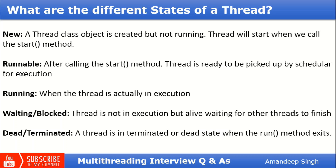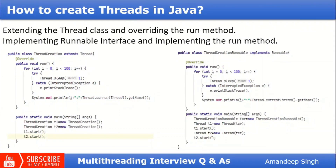The next is Running state — when the scheduler actually picks up the thread and starts its execution, that thread is in the Running state. After that is Waiting or Blocked — the thread is not in execution but is alive, waiting for other threads to finish. The last state is Dead or Terminated — when the thread has executed completely. A thread is terminated when its run() method exits, after which the thread changes its state to Dead or Terminated.